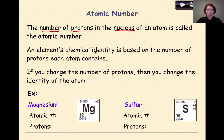For a particular element, the atomic number represents the number of protons found in each atom of that element. An element's chemical identity is based on the number of protons each atom contains. If you change the number of protons, then you change the identity of the atom. And that's a really important statement right there. So let's say it one more time. If you change the number of protons, then you change the identity of the atom.